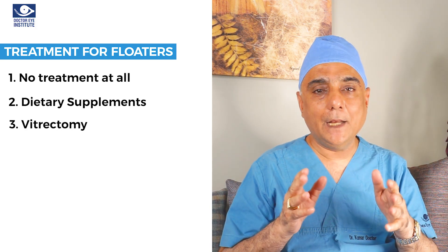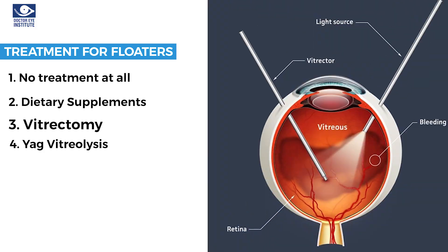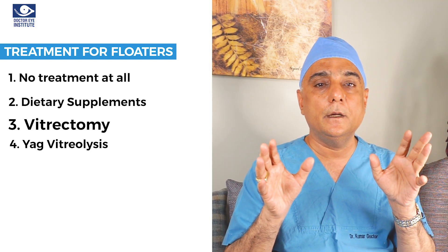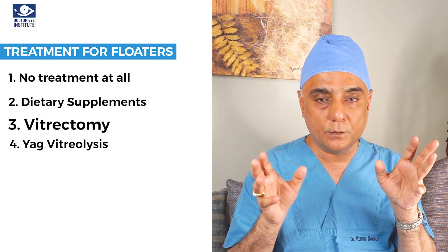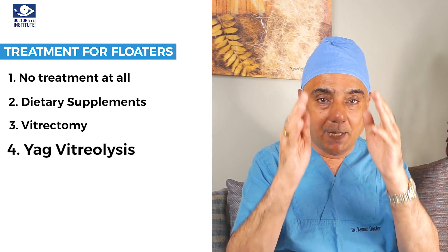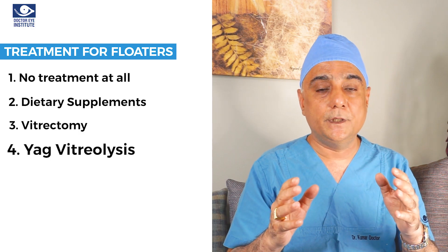The two main surgical options are vitrectomy and vitreolysis. In vitrectomy, the patient undergoes a surgical procedure where we remove the floaters and replace the vitreous with a balanced saline solution (BSS). In vitreolysis — also called an outpatient or OPD procedure — we give laser shots to the vitreous floaters that the patient is seeing and break them down into smaller spots.